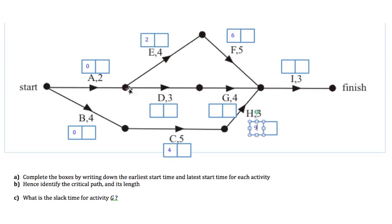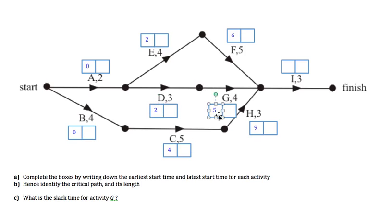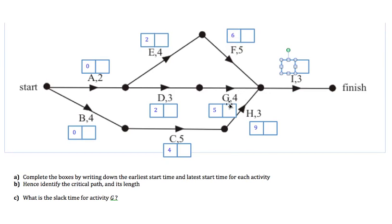We still don't have enough information for I yet, so we'll fill in the middle paths. A takes two to complete, so D, which can start after A is finished, can start at two. D takes three, so two plus three gives us five, meaning G would be ready to start at earliest five. Now for Activity I: it has to wait for F, G, and H to all finish. F finishes at 11 (six plus five), G finishes at nine, and H finishes at 12. The latest to finish is 12, so I can't start until 12.